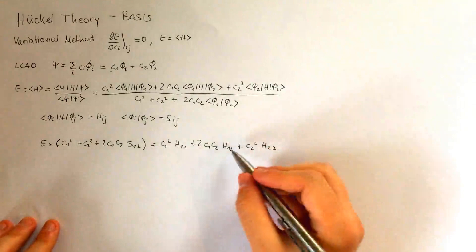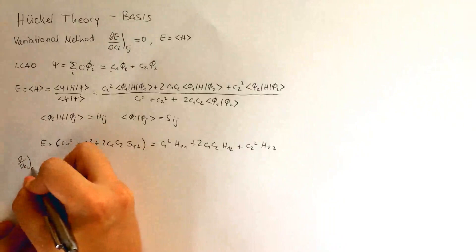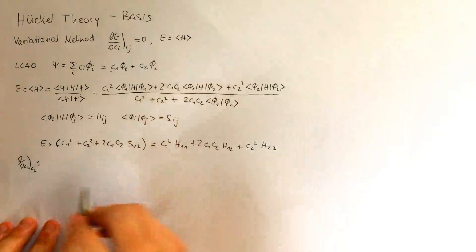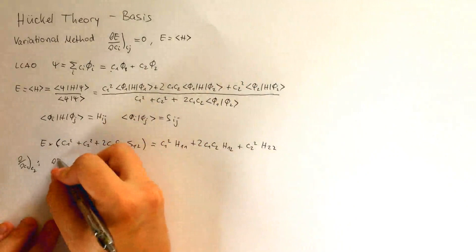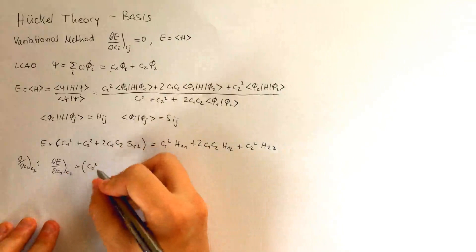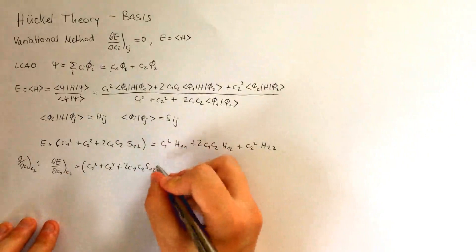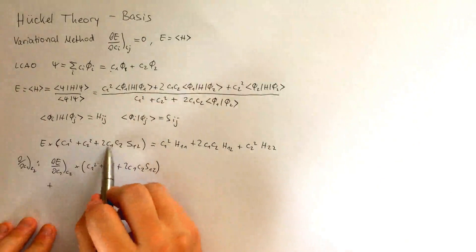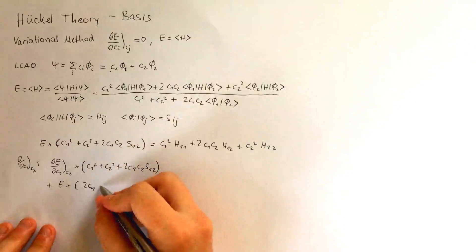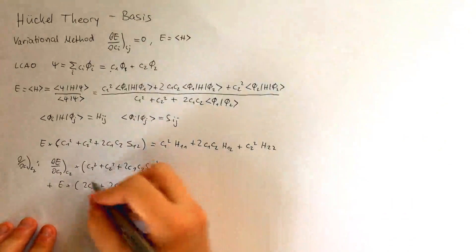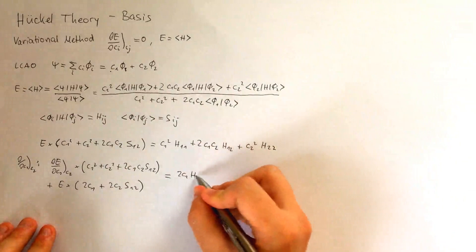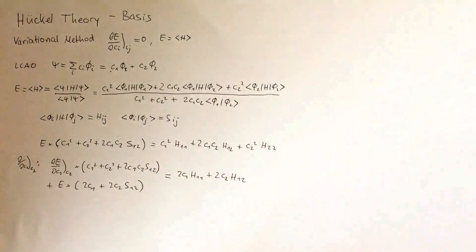Now I take the derivative with respect to C1 on both sides, holding C2 constant, and we get, using the product rule on both sides, DE by DC1 constant C2 times C1 squared plus C2 squared plus 2 C1 C2 S12 plus, holding now this constant and taking the derivative on the left hand side, and on the right hand side we get 2C1 H11 plus 2C2 H12.